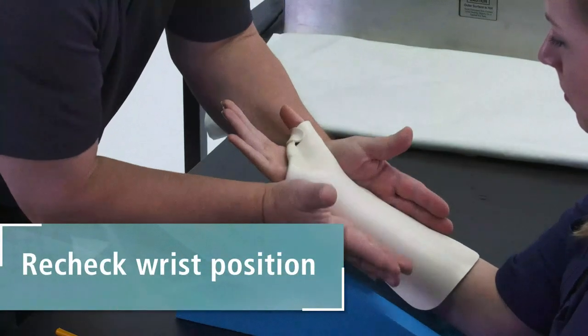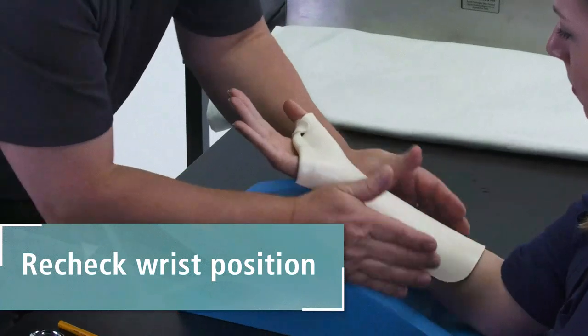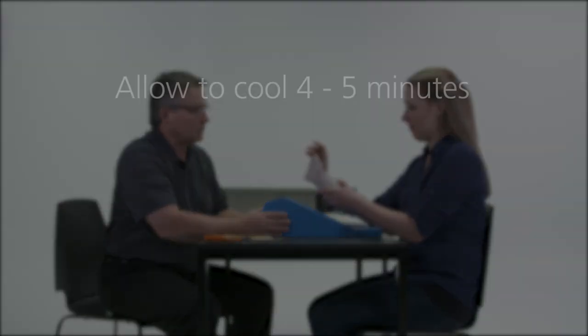Using open hands, gently stroke the wrist and forearm portions. Allow the splint to cool for 4-5 minutes.